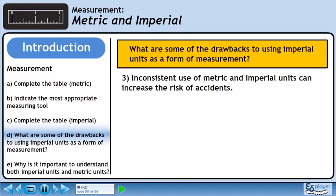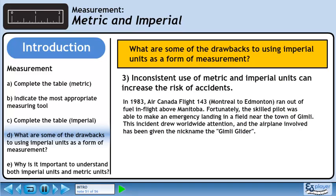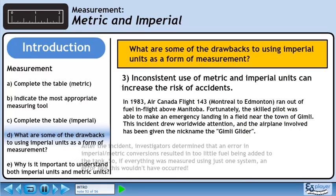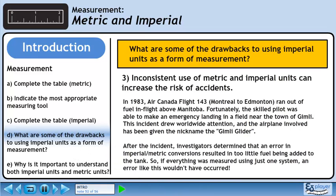Drawback number 3 is that inconsistent use of metric and imperial units can increase the risk of accidents. In 1983, Air Canada Flight 143 from Montreal to Edmonton ran out of fuel in flight above Manitoba. Fortunately, the skilled pilot was able to make an emergency landing in a field near the town of Gimli. This incident drew worldwide attention and the airplane involved has been given the nickname the Gimli Glider. After the incident, investigators determined that an error in imperial metric conversions resulted in too little fuel being added to the tank. So if everything was measured using just one system, an error like this wouldn't have occurred.